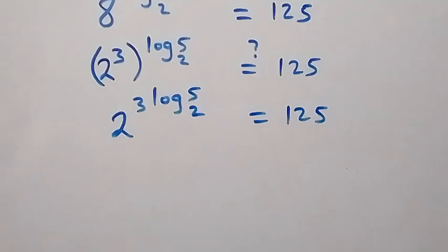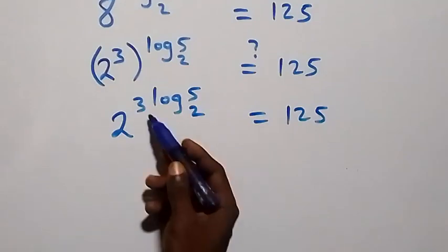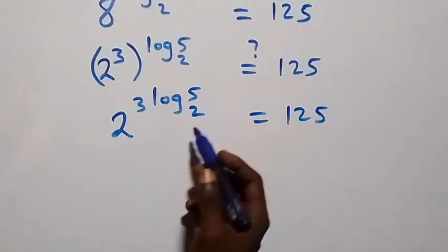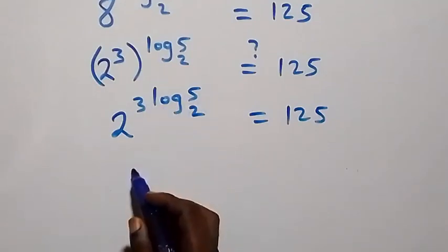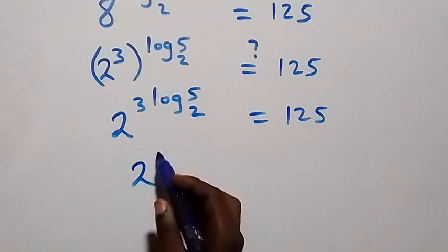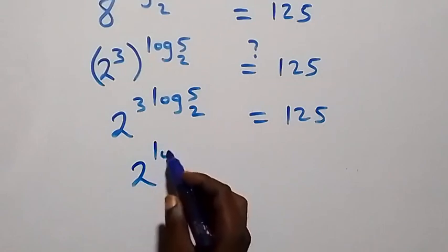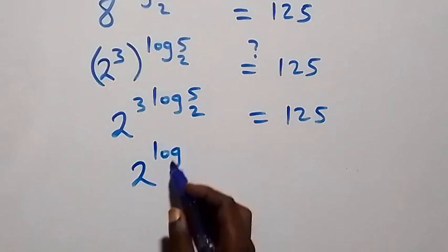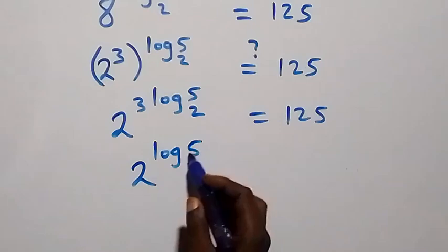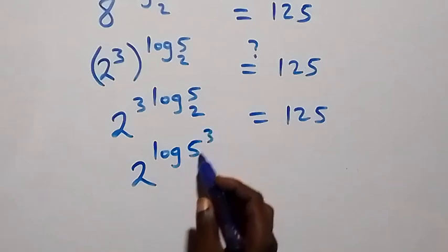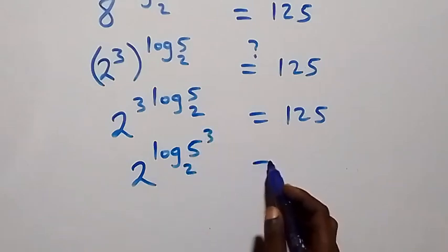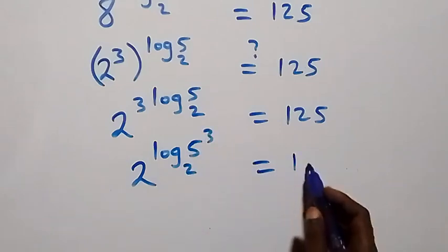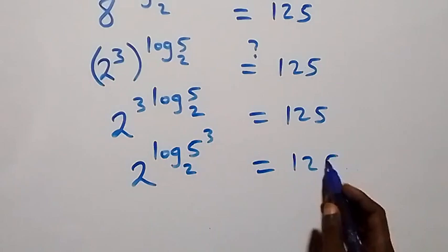We reverse the power: the 3 comes up so we have 2 raised to the power log of 5 raised to power 3, to base 2, equals 125.